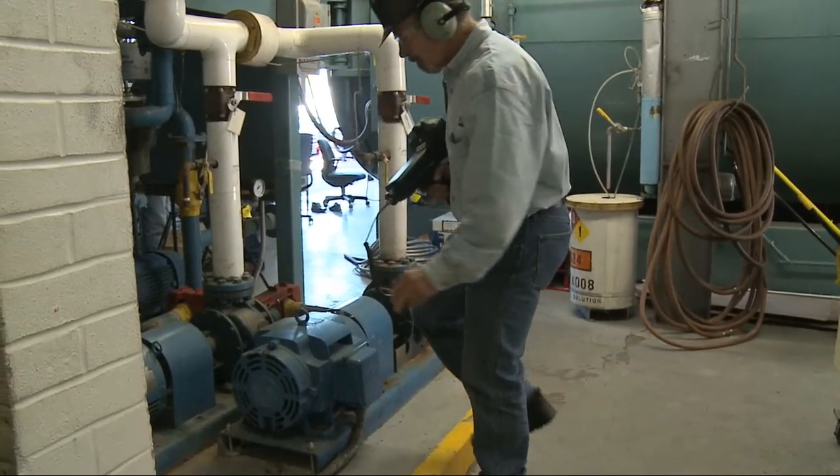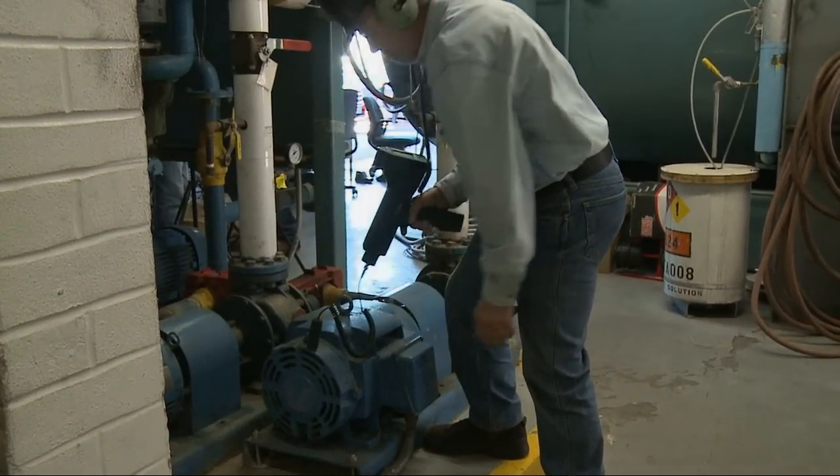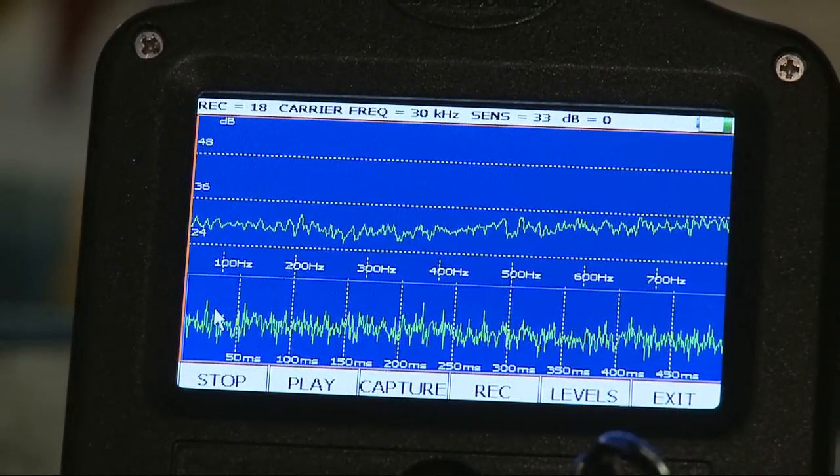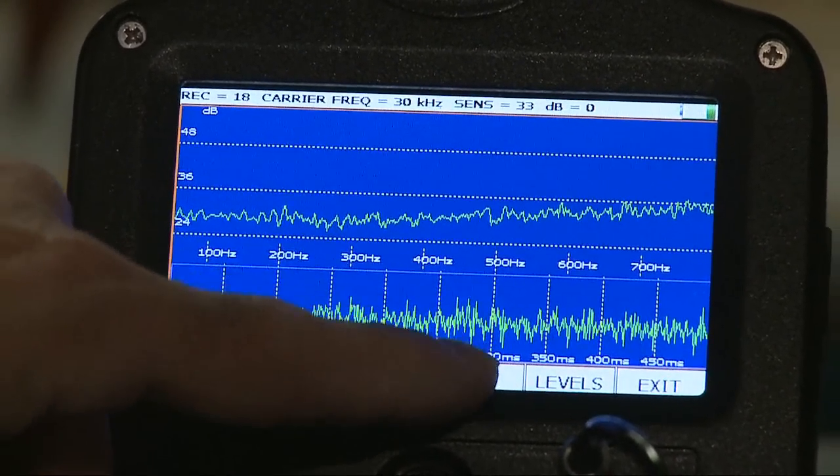As you move through your route, you may spot something that needs to be analyzed. Touch the screen to select the onboard spectral analyzer. Now, test your bearing and analyze the condition on the spot.